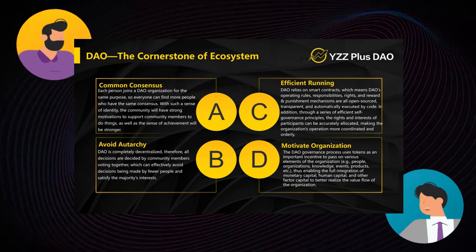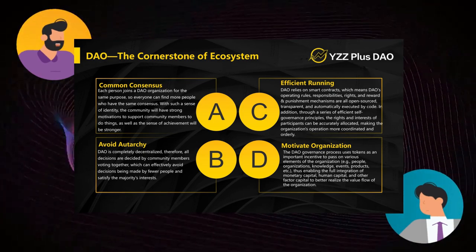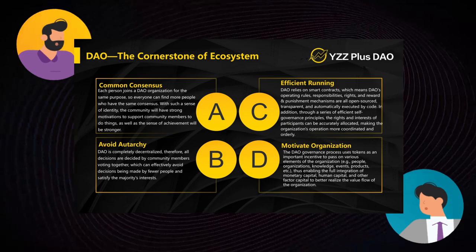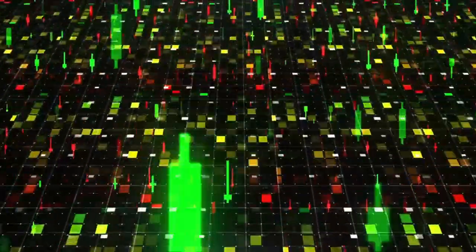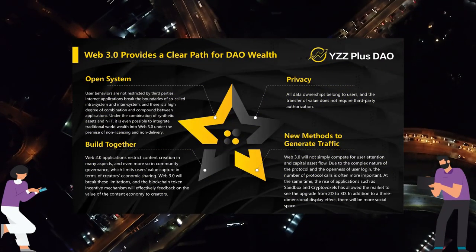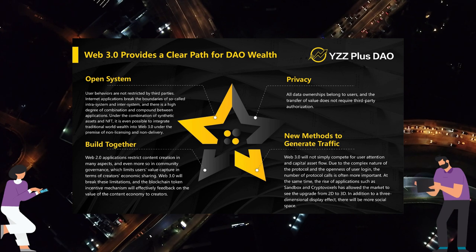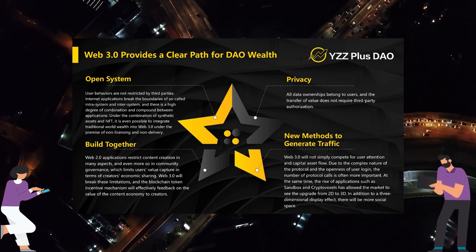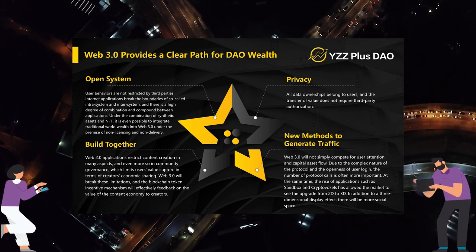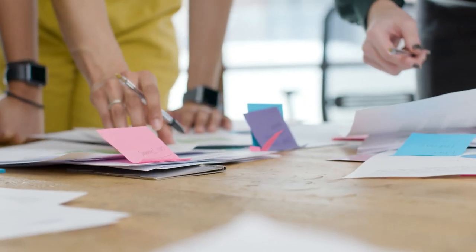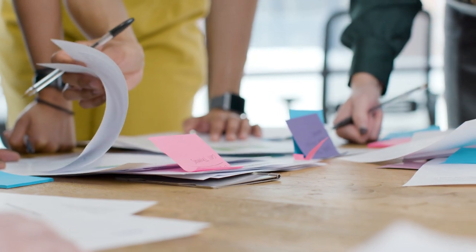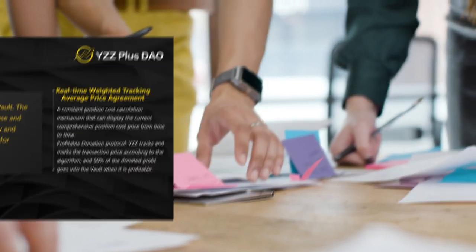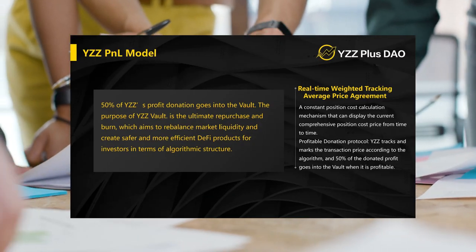The YZZ token has clear goals and objectives as evidenced by its core components. The token uses DAO, a fair and transparent asset management mechanism that allows you to increase your profits. Moreover, YZZ is a Mega Net Node — YZZ's unique intelligent network channel — where community leaders can create a community grid and use various tools to earn commissions. Web 3.0 technology allows for more effective structures to increase user loyalty.